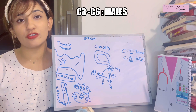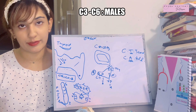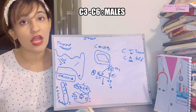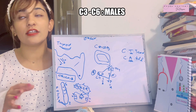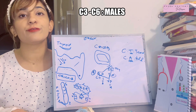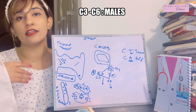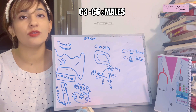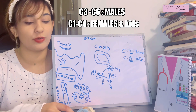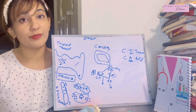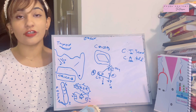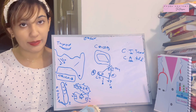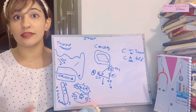The larynx lies in front of the C3 to C6 vertebrae in males, but for children and females it lies a little higher, from C1 to C4. Now let's talk about the basic structure or the skeletal framework of the larynx.